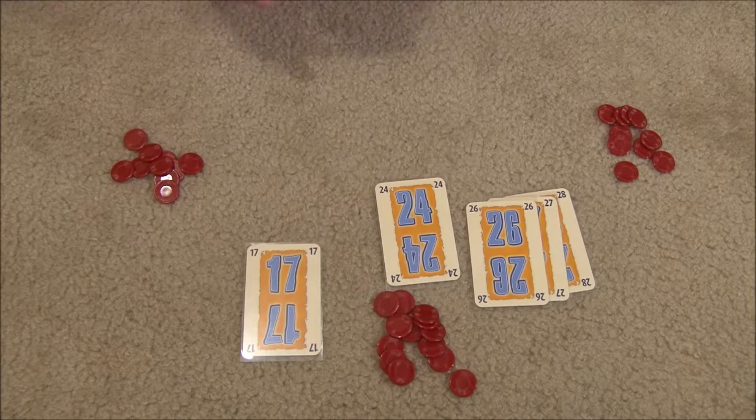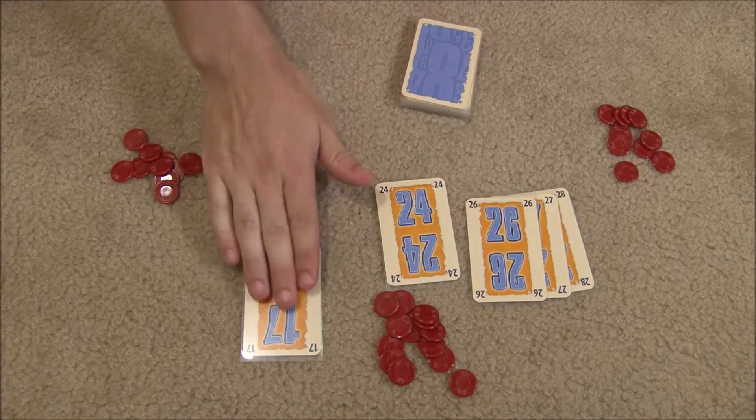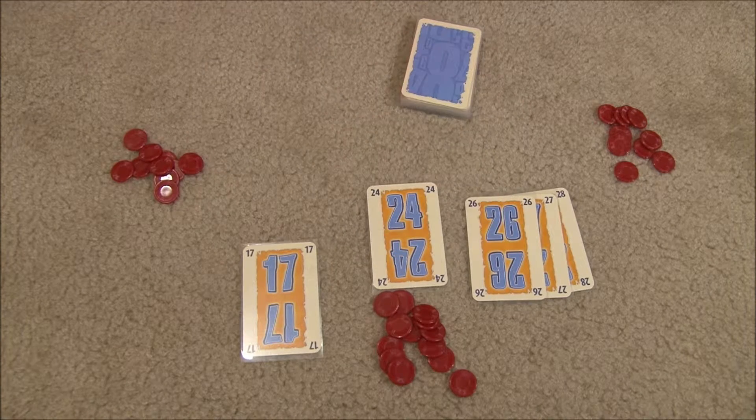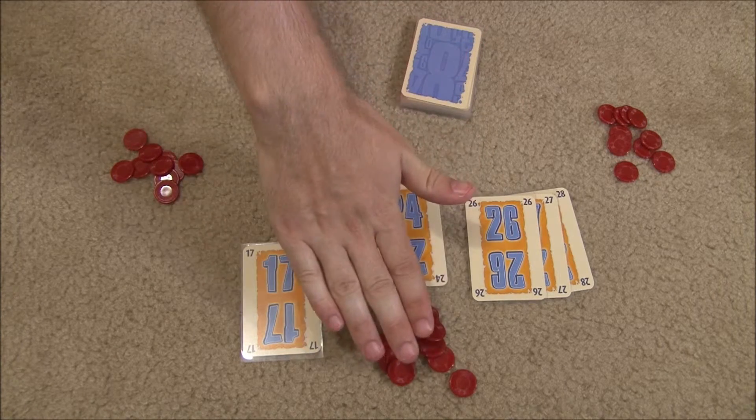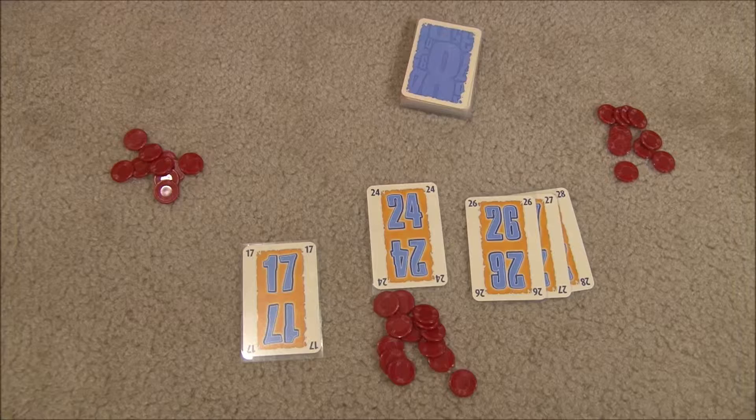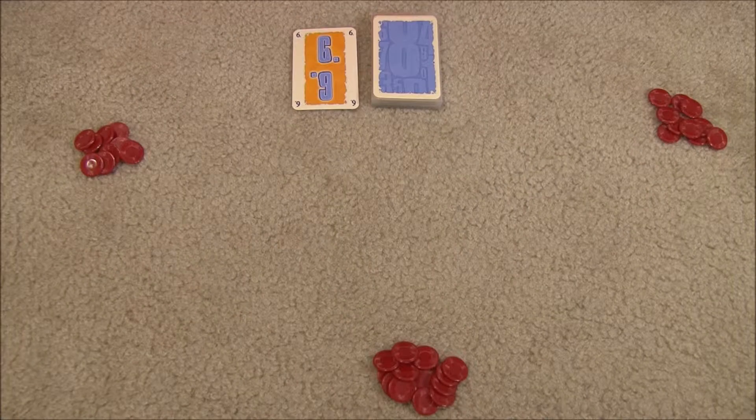If he had 26, 27, 28, for instance, he would only add that 26. So it would be 17 plus 24 plus 26. After you sum up your numbers, you subtract the number of chips you still have, and then whoever has the lowest score wins. Let's get going with this example playthrough.